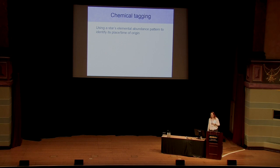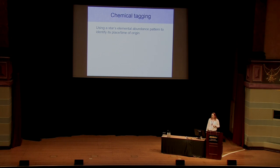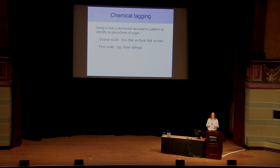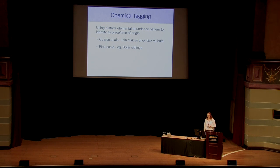Chemical tagging can mean a number of things — ultimately you're trying to use the elemental abundance pattern of a star to say something about where and when it formed. At a coarse level you can distinguish the thin disk and the thick disk. More precisely, you can try to match stars that formed in the same molecular cloud. What I'll be talking about is a rough chemical tagging — we just want to say whether a star came from a globular cluster in general, not which specific one.